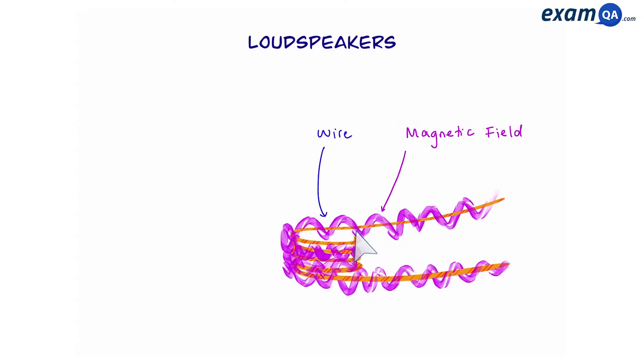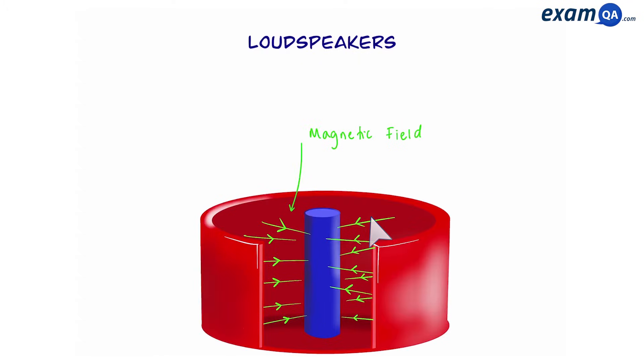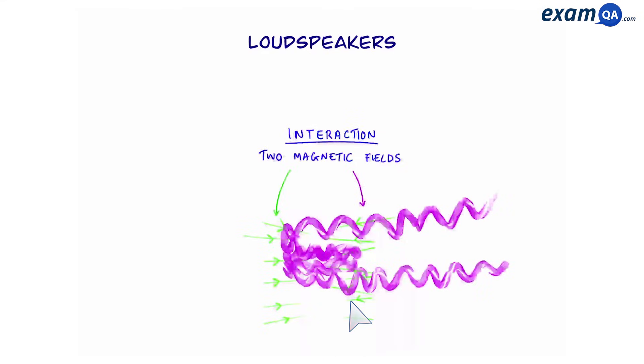So we have wires with a magnetic field around them and we also have the magnetic field of the circular magnet. That means there are going to be two magnetic fields interacting, one of the circular magnet and two the magnetic field inside the wire. We know when there's interaction between two magnetic fields this creates a force and we call this the motor effect.